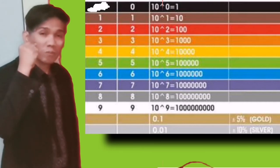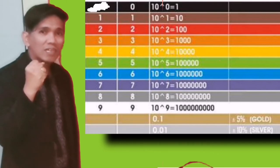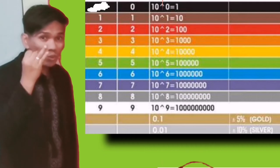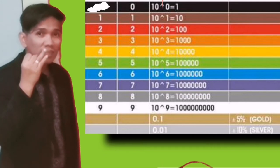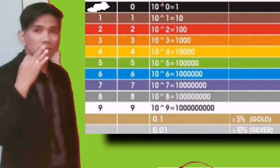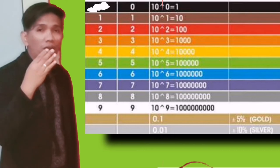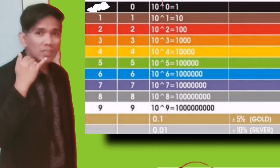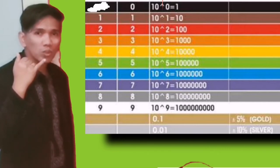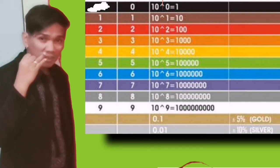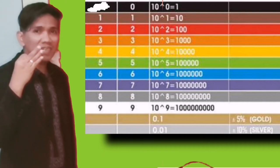Using your fingers: a closed fist is black (0). Your first finger is brown (1). Red is 2. Orange is 3. Yellow is 4. Green is 5. Blue is 6. Violet is 7. Gray is 8. White is 9. Each finger corresponds to a color and its digit value in the first and second band positions.